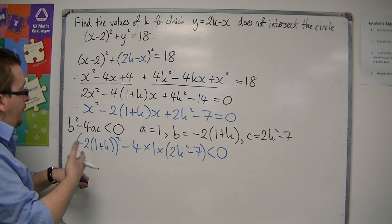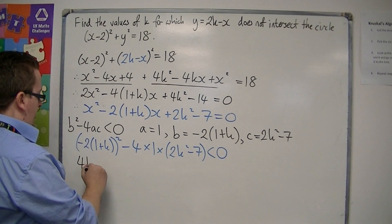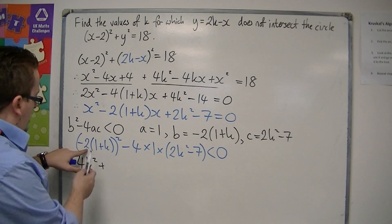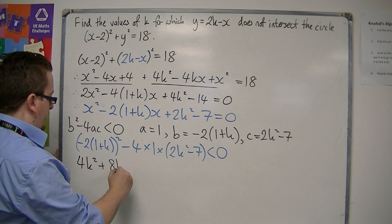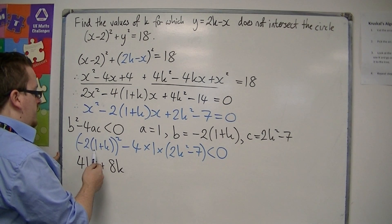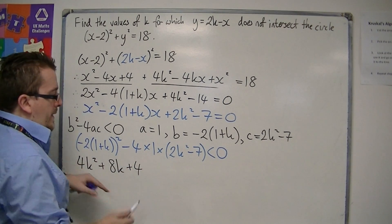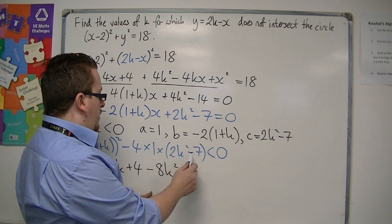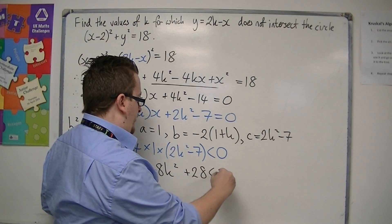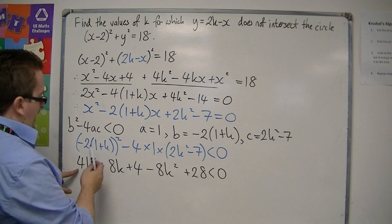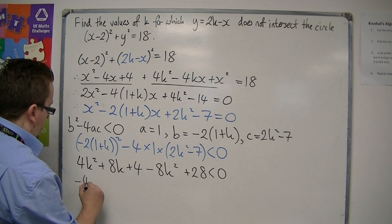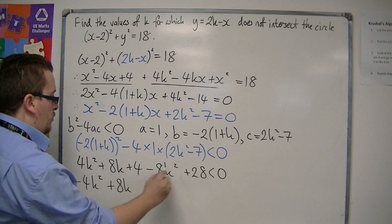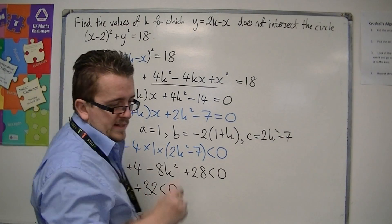Plugging these values in, we get b squared — that's minus 2 lots of (1 plus k), all squared — take away 4 lots of a times c, must be less than 0. Expanding: minus 2 squared is 4, giving 4k squared plus 8k plus 4, then minus 4 times 2k squared is minus 8k squared, and minus 4 times minus 7 is plus 28, all less than 0. Collecting terms: 4k squared minus 8k squared is minus 4k squared, plus 8k, plus 32, is less than 0.